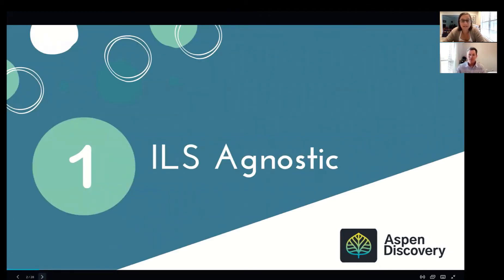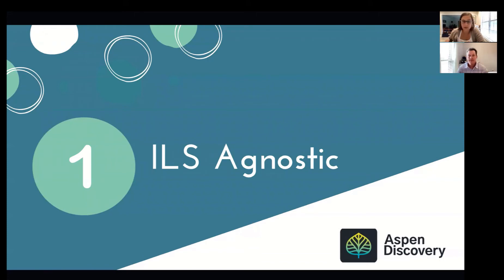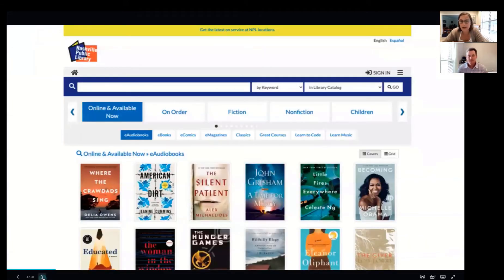So the first big reason is it's ILS agnostic, and what that means for you is that Aspen Discovery is an open-source discovery layer that integrates all your material and can work with any ILS, whether it's Koha, Symfony, Carl X, Horizon, Sierra, or even Polaris. Aspen Discovery can sit on top of your ILS so it can connect your patrons directly to all the material available in your collection, whether it's databases, e-content, events happening at your library, or maybe a list of all the new LGBT titles in your collection.